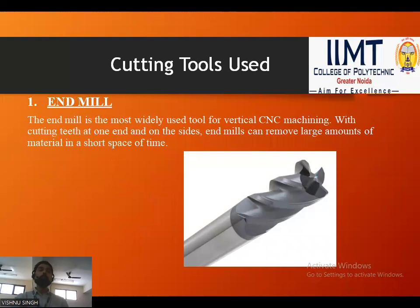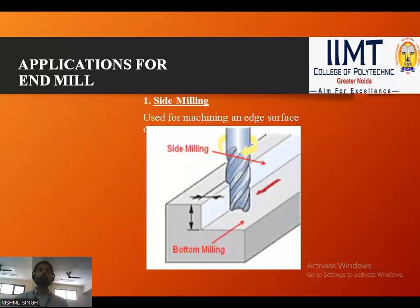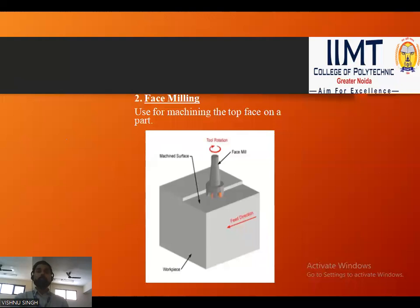Now let's look at the cutting tools used in a CNC machine. First is the end mill — the most widely used tool for vertical CNC machining. With cutting teeth at one end and on the sides, an end mill can remove a large amount of material in a short space of time. Its applications include side milling, used for machining an edge surface.